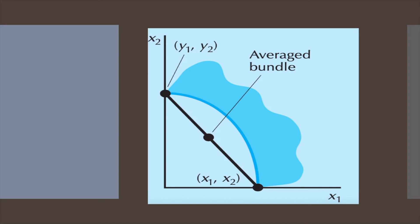But either one of these bundles would be better than consuming 5 ounces of each, which is the average of the extreme bundles. The consumer would prefer to specialize in one of the goods at least to some degree and to consume only one of the goods.